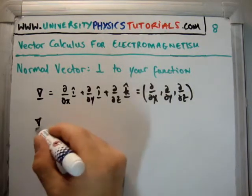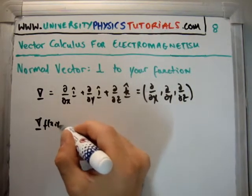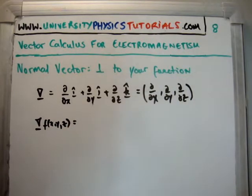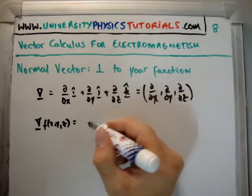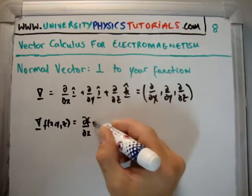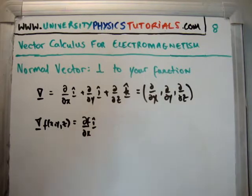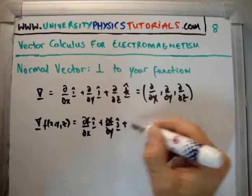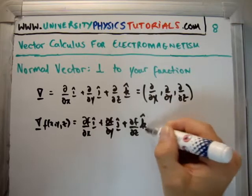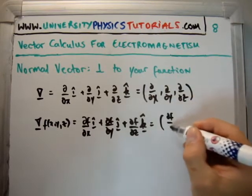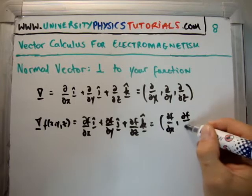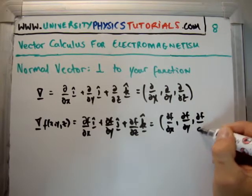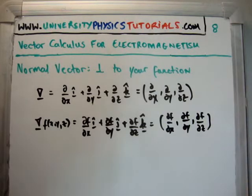If you take the gradient of a function — let's say f, a function of x, y, and z — the gradient operates on the function and you get: del f/del x i-hat, plus del f/del y j-hat, plus del f/del z k-hat. Note it's a partial derivative because it's a function of more than one variable. We can also write this in matrix notation — they are equivalent. Note that the gradient is a vector; it still has the unit vector components.